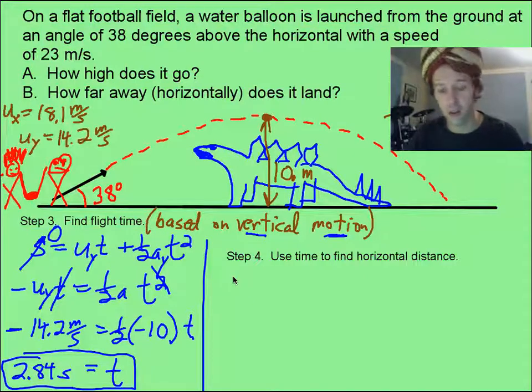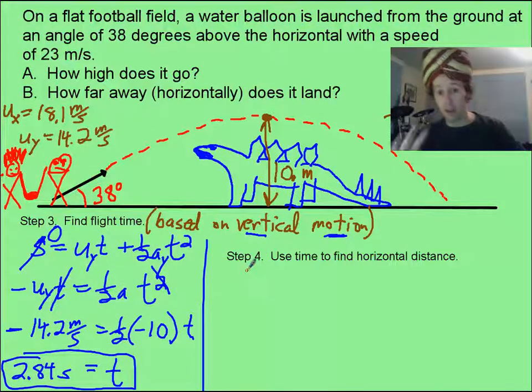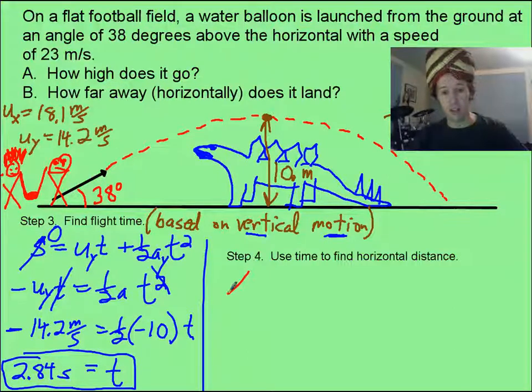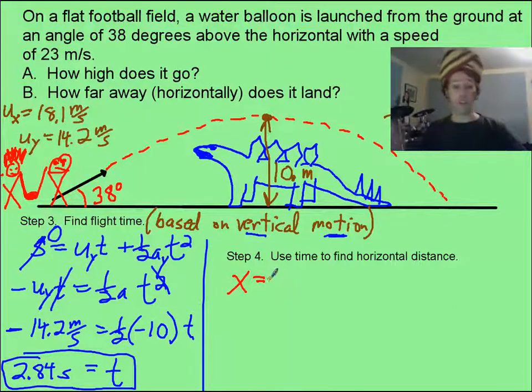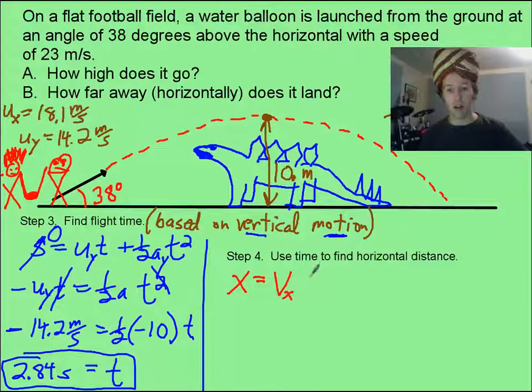Now you are ready to find the horizontal distance. And if you know you're ready for it, and you've done all the other steps, it's easy, because that horizontal distance has no acceleration in the motion. So it's just a simple x-velocity multiplied by the time.